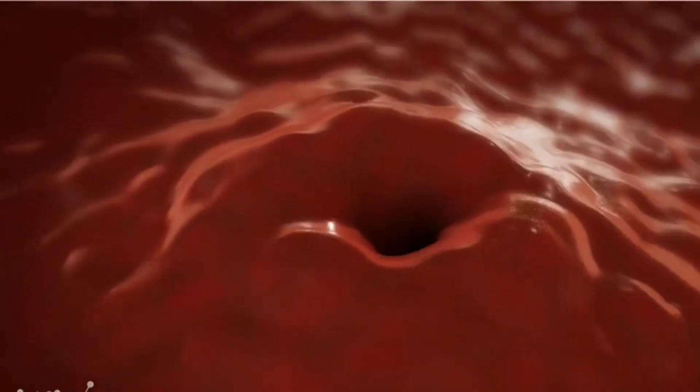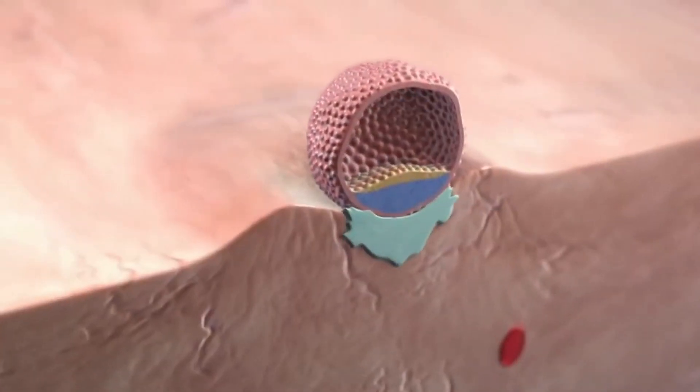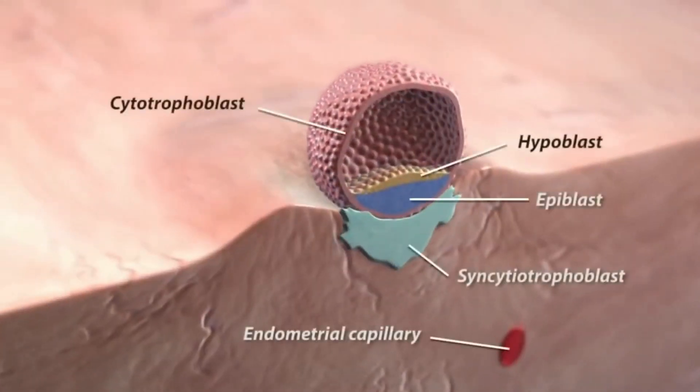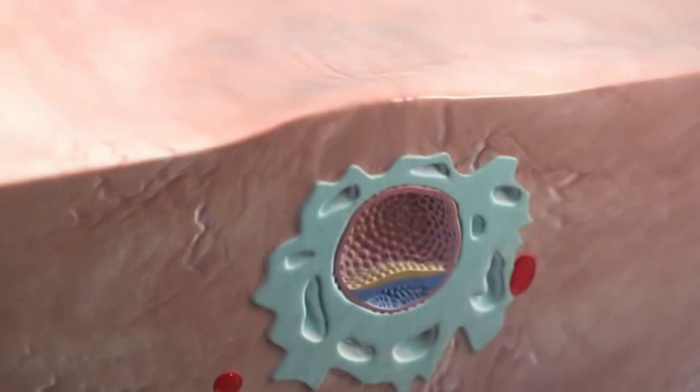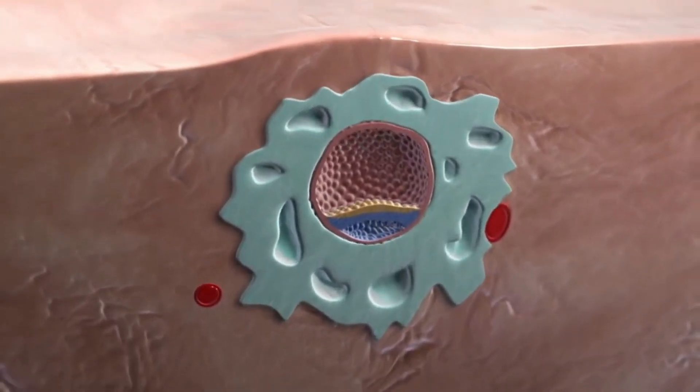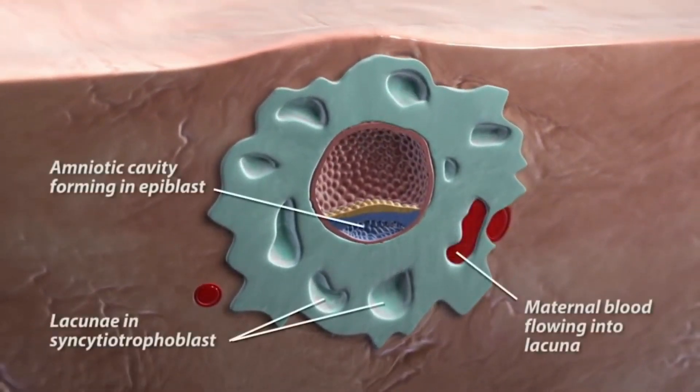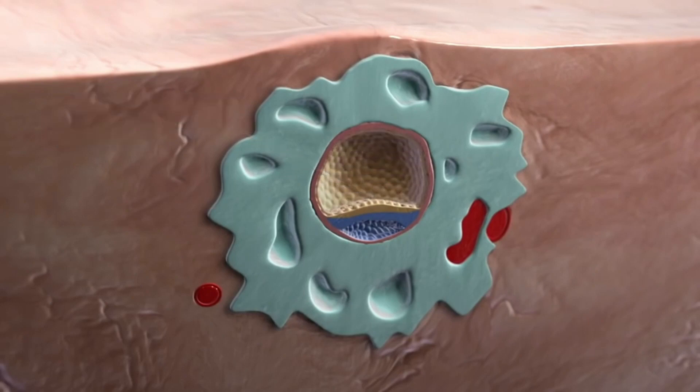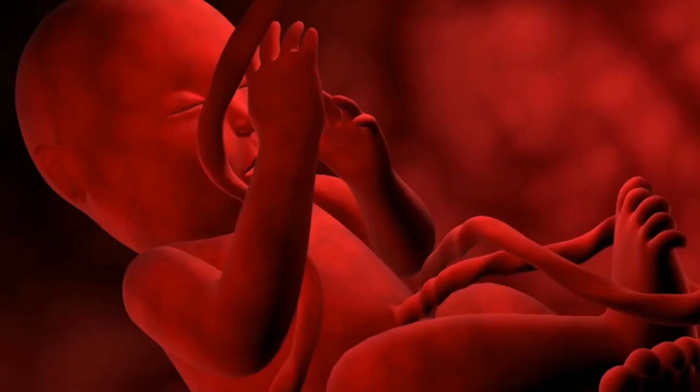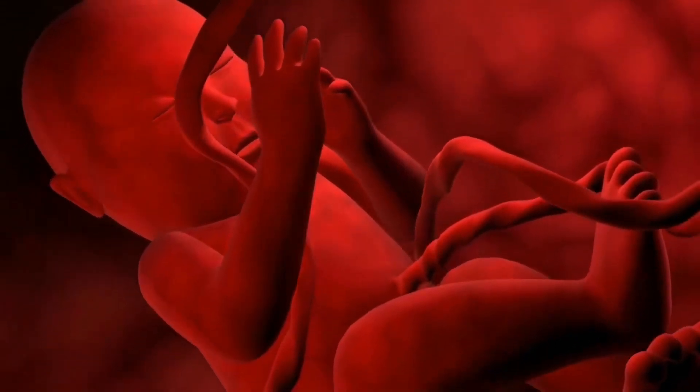The blastocyst implants in the wall of the uterus about six days after fertilization, usually near the top. This process, called implantation, is accomplished by day nine or ten. The wall of the blastocyst is one cell thick, except in one area where it is three to four cells thick. The inner cells in this thickened area develop into the embryo, and the outer cells burrow into the wall of the uterus and develop into the placenta.